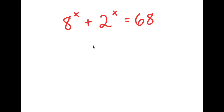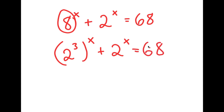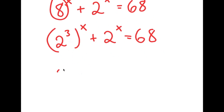In this problem, I have 8 to the power of x plus 2 to the power of x is equal to 68. So I'm going to start by rewriting 8 as 2 to the power of 3. So I get 2 to the power of 3 to the power of x plus 2 to the power of x is equal to 68. I can rewrite 2 to the power of 3x as the quantity 2 to the power of x, all to the power of 3, since (a^m)^n = a^(mn).